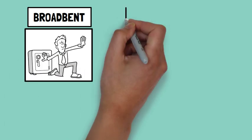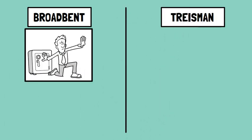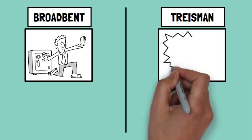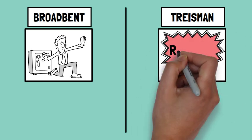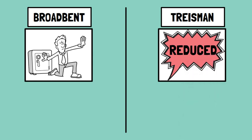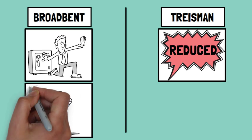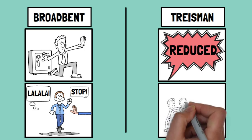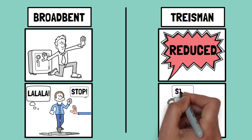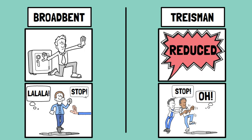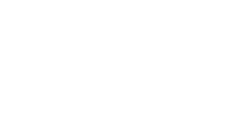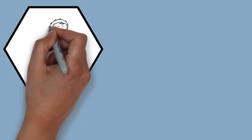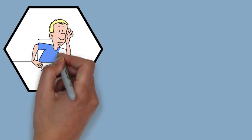Treisman's theory differs from Broadbent's filter theory, which proposed that unattended information is completely blocked out. Treisman suggested that information isn't entirely filtered out but rather reduced in strength, meaning unattended information can still influence us to some extent. If Broadbent's theory were true, you would never notice anything from background conversations at the party, but with Treisman's theory you might still hear important snippets because the attenuator lets some information through.